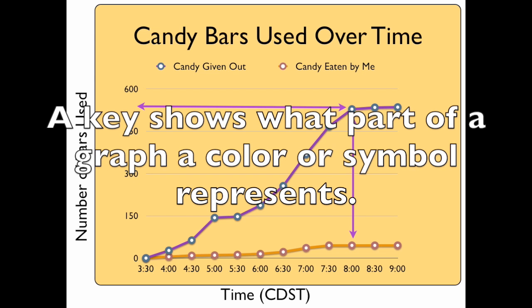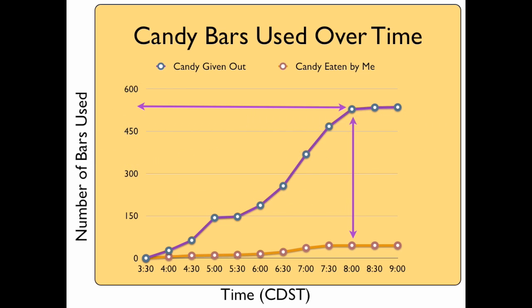I notice that there's an orange line too. What does it mean that there are two different colors? Well, if you look at the key, the purple line shows candy I gave out to trick-or-treaters. The orange line shows candy that I ate myself. Wow, on that graph you eat a lot of candy. I wonder how many calories that actually is. I have data for that too.